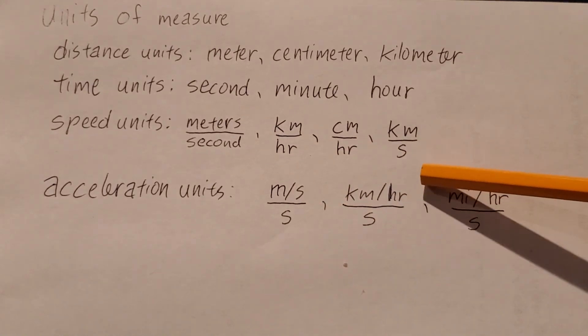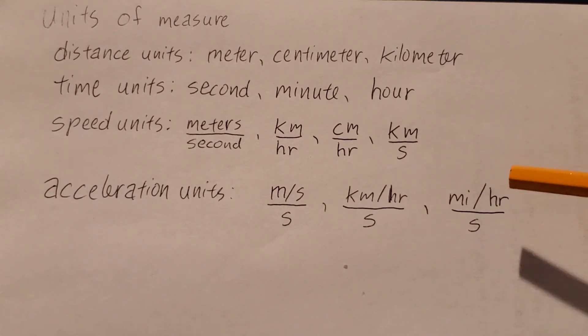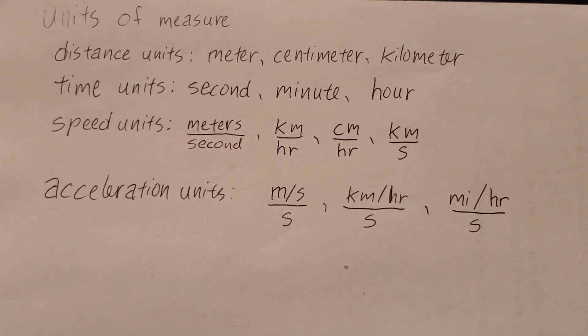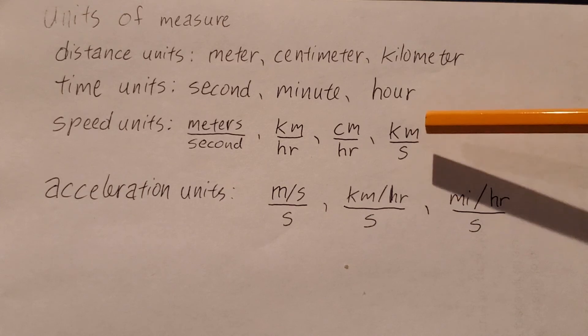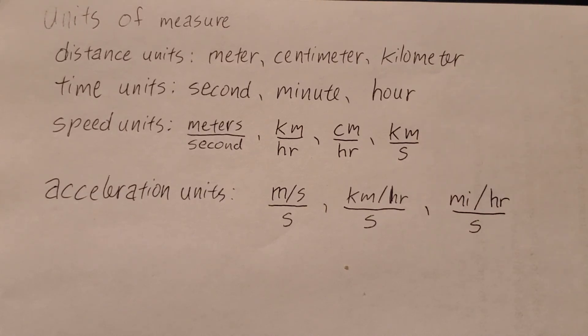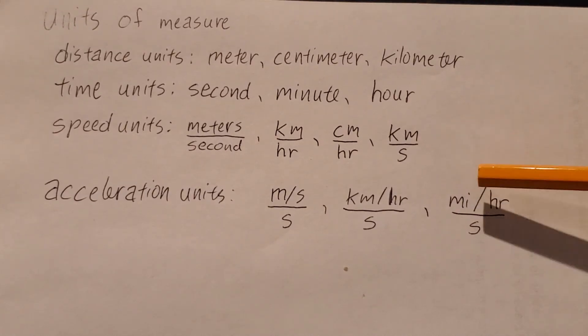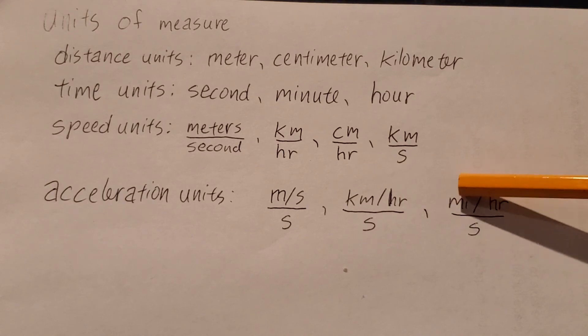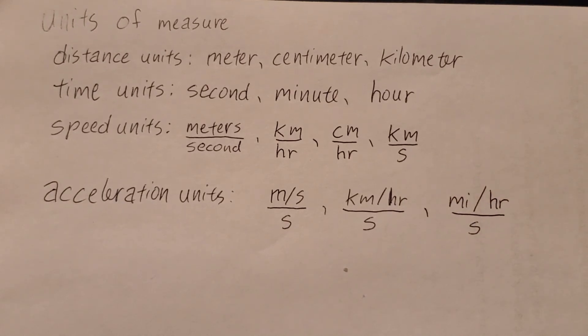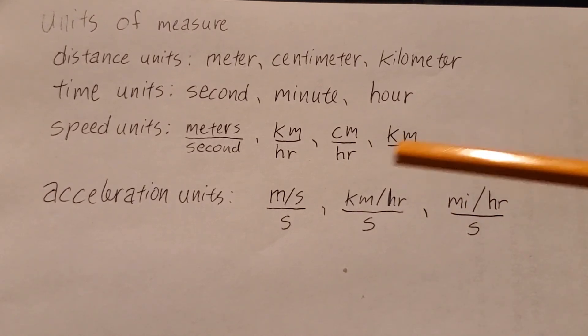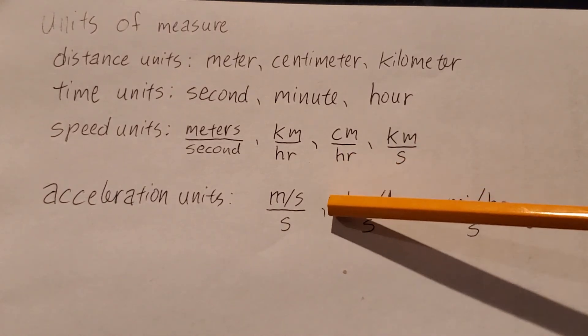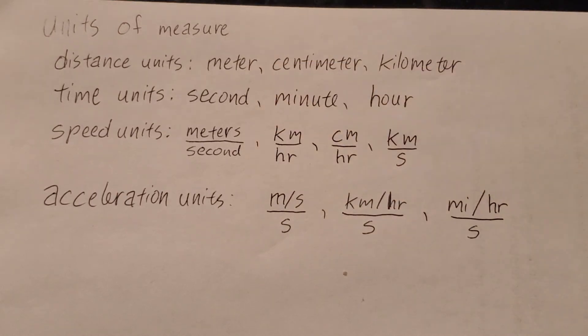Again, kilometers per hour per second, and then miles per hour per second. So we can see that an acceleration is always a speed combined with a time. Because speed is distance with time, then we have distance with time with time again. So please pay attention to your units when you do acceleration calculations. And these accelerations are as different from speeds as speeds are from distances. And that is all for this video.